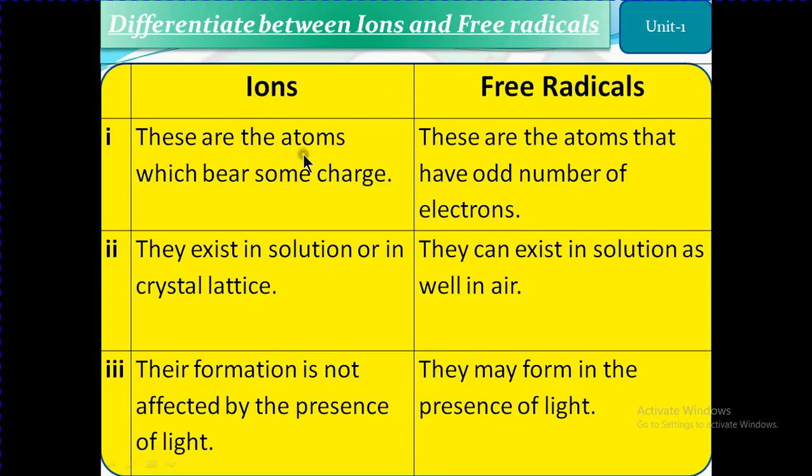Ions are atoms which bear some charge, either positive or negative. Whereas free radicals are atoms that have an odd number of electrons - maybe one, three, five, like this. Or you can say unpaired electrons.